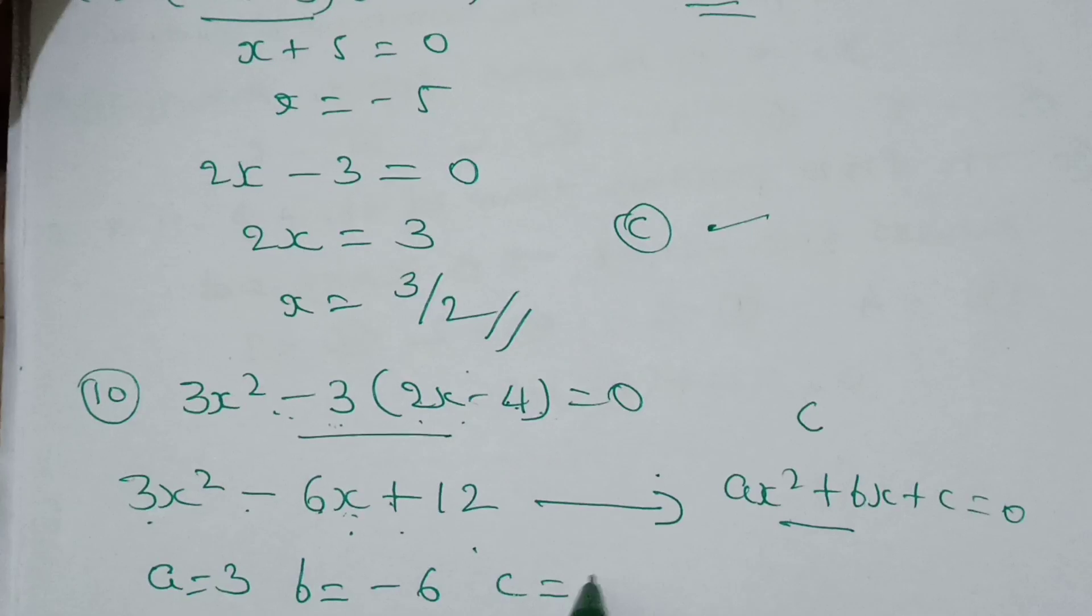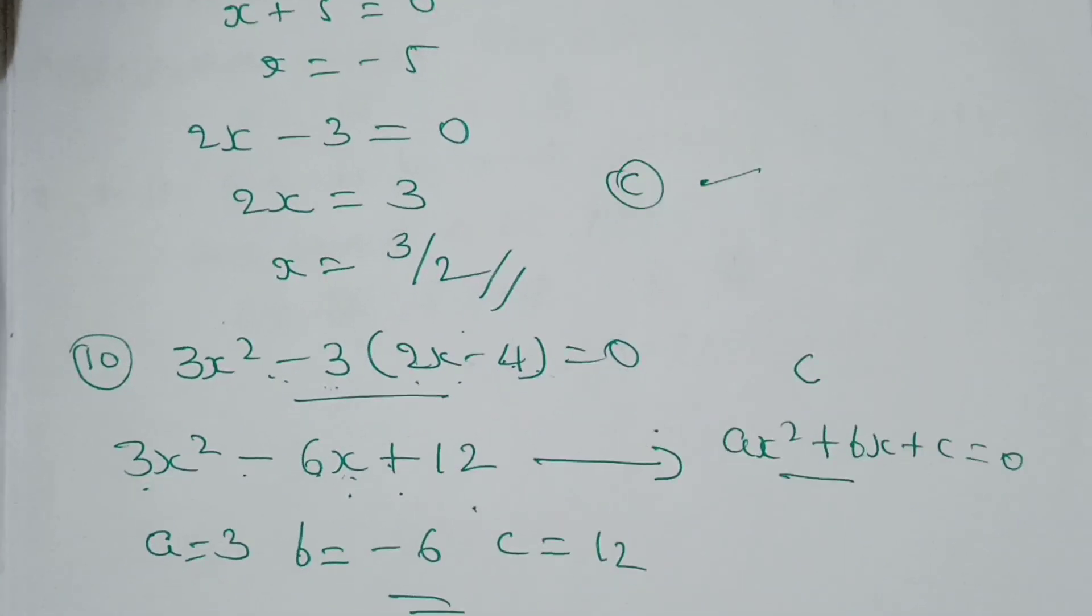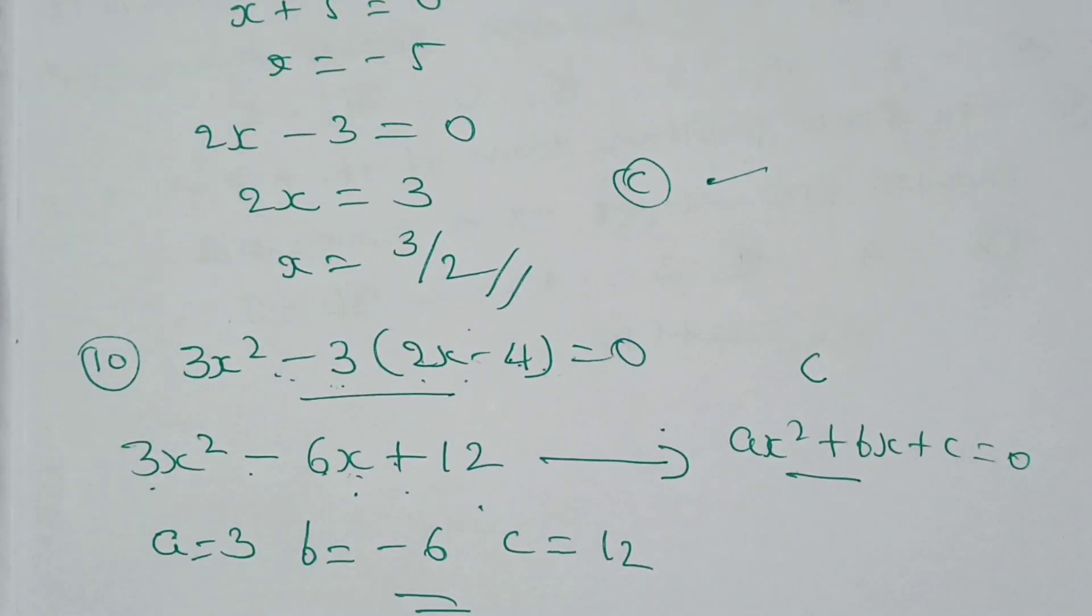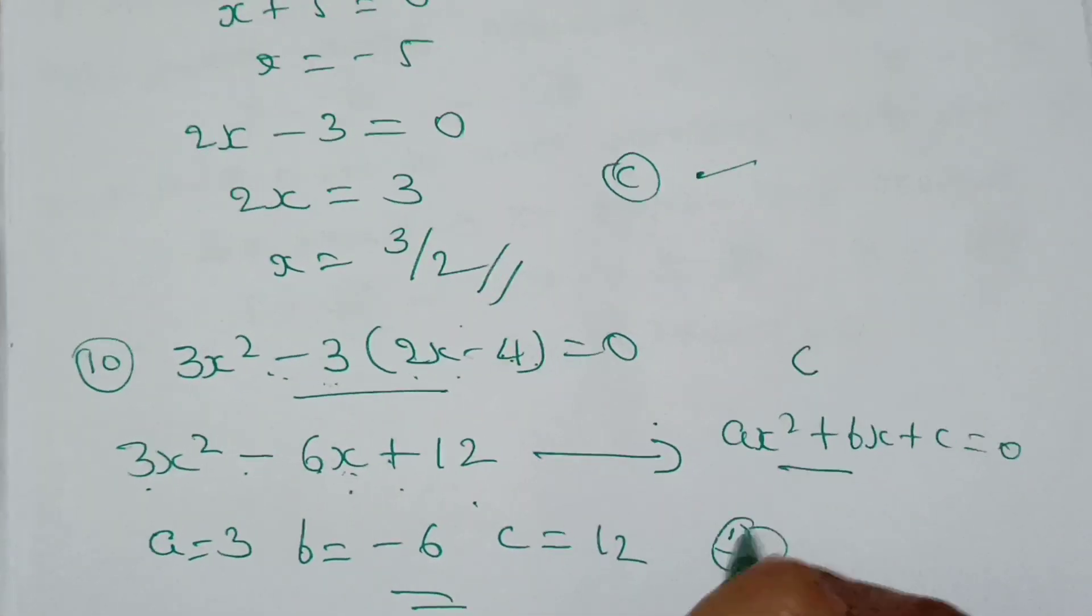So which option is right? C is 12, which means option D is right.